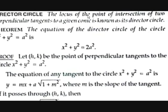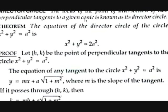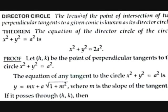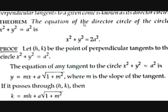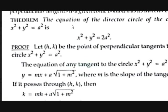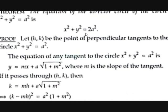The locus of the point of intersection of perpendicular tangents (90 degrees) to a given conic is called the director circle. The theorem states: the equation of the director circle of x²+y²=a² is x²+y²=2a².